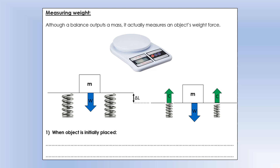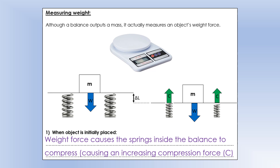We are often interested in measuring an object's mass or weight. We can't really measure an object's mass very easily directly - what we're often doing is measuring an object's weight force and then calculating what the mass is from that. That's what a spring balance or mass balance does: when we put an object on the pan, the weight force of the object acts to compress the springs inside the balance.